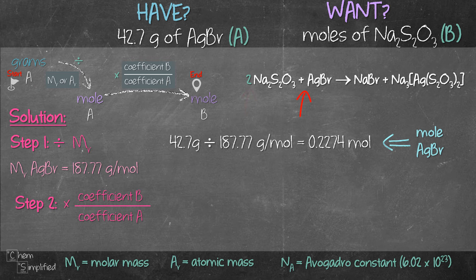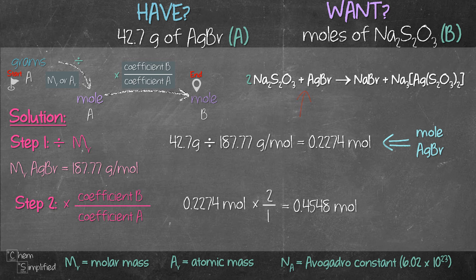Coefficient A is the number in front of AgBr, which is 1. So we take 0.2274 mole and multiply with 2 over 1 and that gives us 0.4548 mole.